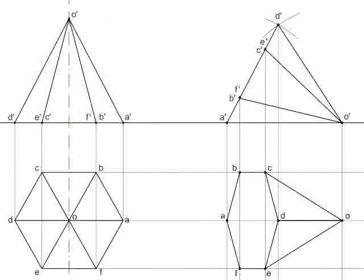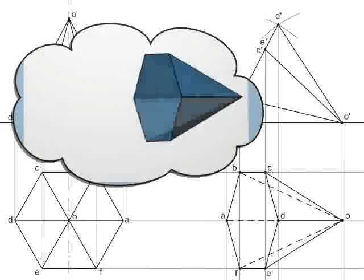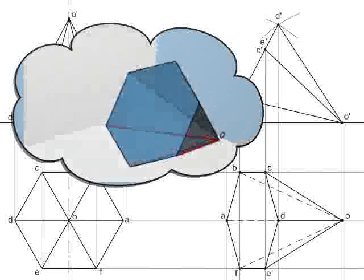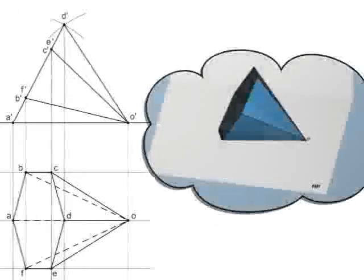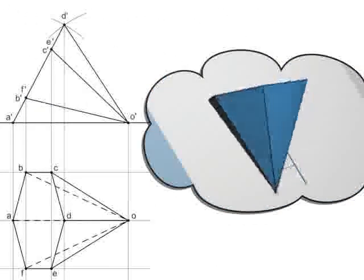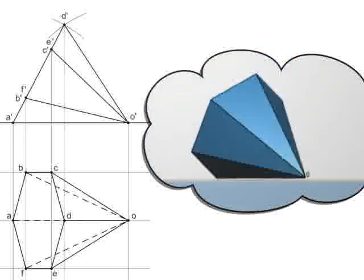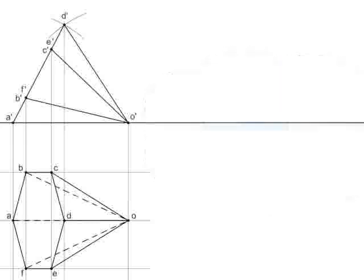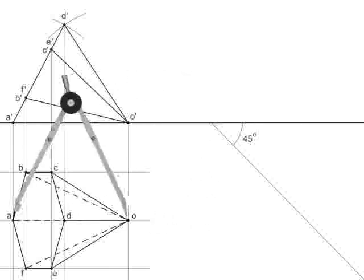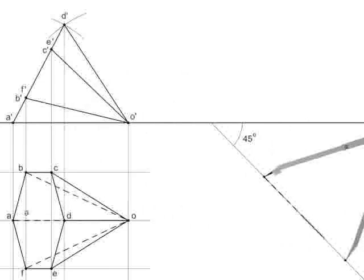Lines crossing base AO, BO, and FO will be dotted as they are hidden. Now consider the rotation of the plan by 45 degrees where observer is nearer to the apex. For this, draw line AO making an angle of 45 degrees to line XY.